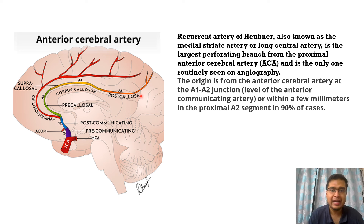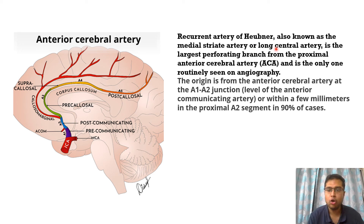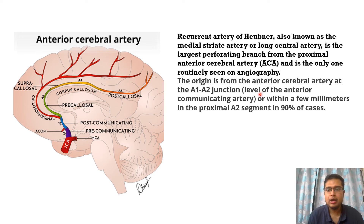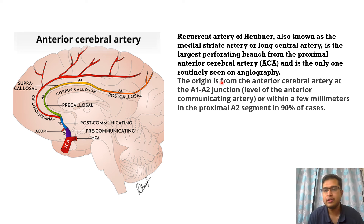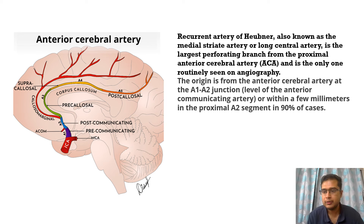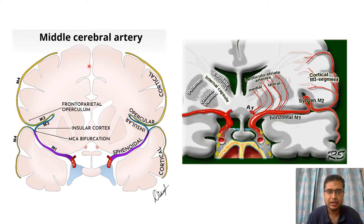A5 is the post-callosal segment of the ACA. Important branches include the anterior communicating artery, callosomarginal artery, and recurrent artery of Heubner. The recurrent artery of Heubner, also called the medial striate artery or long central artery, is the largest perforating branch of the proximal ACA, routinely seen on angiography. It originates at the A1-A2 junction — at the level of the anterior communicating artery — or within a few millimeters of the proximal A2 segment in 90% of cases. It supplies the caudate head.